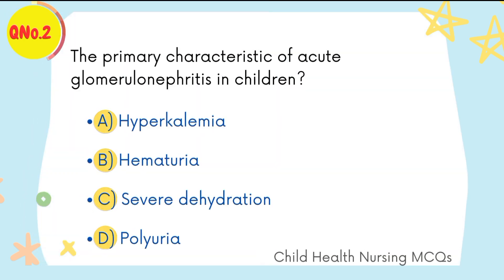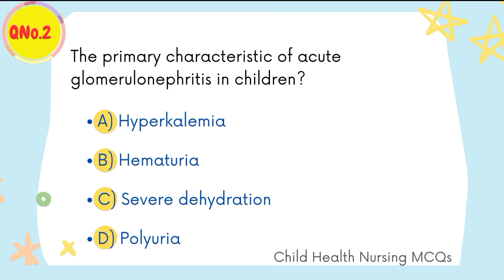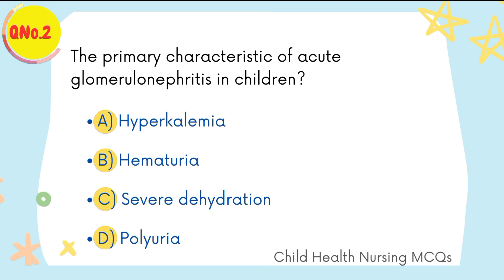Question number two: the primary characteristic of acute glomerulonephritis and the priorities in children. B is the right option: hematuria.